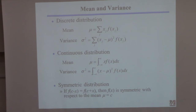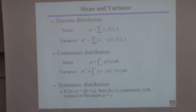What I'm talking about here is the true mean and the true variance. To know the true mean and true variance you need to know the f function. If you have the probability function, you can calculate the true mean and the true variance of that particular random variable.